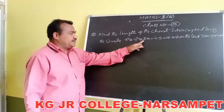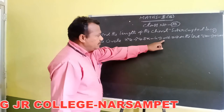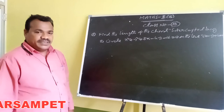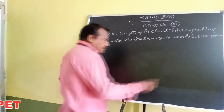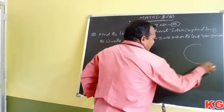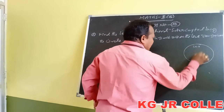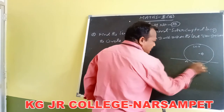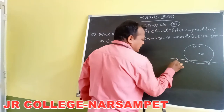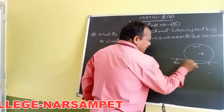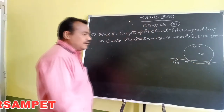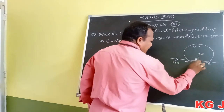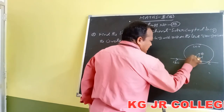Now let's apply this to an example. Find the length of the chord intercepted by the circle x² + y² + 8x - 4y - 16 = 0 on the line 3x - y + 4 = 0. First we draw the rough diagram — this is the circle, this is the line that cuts the circle at two points. AB is the chord, d is the perpendicular distance from the center to the line, and r is the radius.